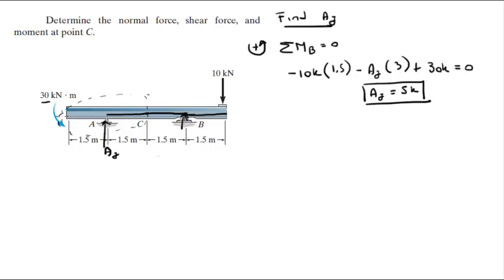Now that we have AY, we're going to use the method of sections. So right here where I made this dotted line, we're going to cut the problem right there and this is going to be C. A is going to be somewhere right here in the middle, this is AY, and you know that the distance from here to here is 1.5 meters and the other half is 1.5 meters as well.